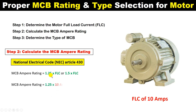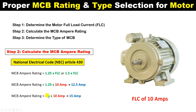Now we will multiply 1.25 with 10 ampere, which gives us 12.5 ampere. If you use 1.5 instead, then 1.5 multiplied by 10 ampere gives 15 ampere. So you have two options — you can use an MCB of 12.5 ampere or an MCB of 15 ampere.